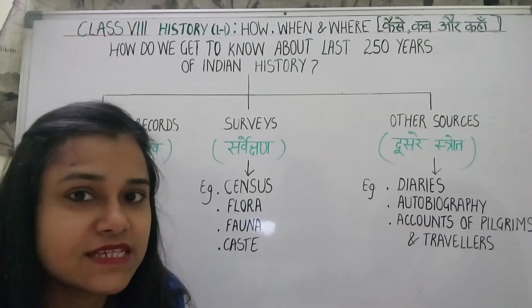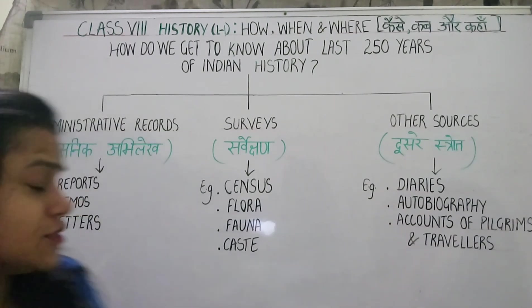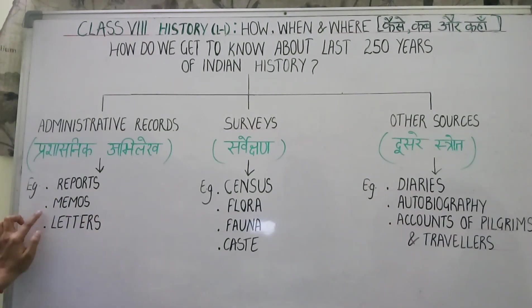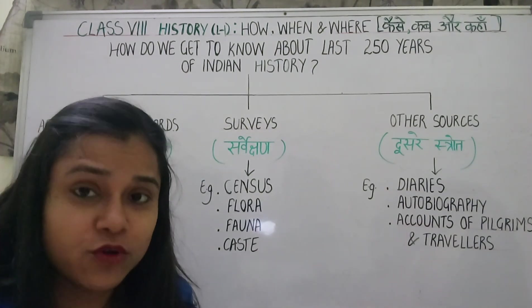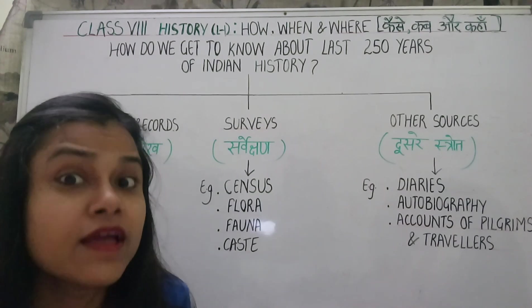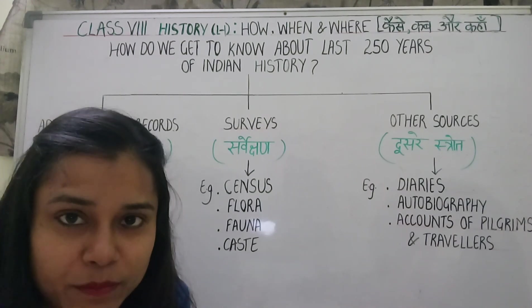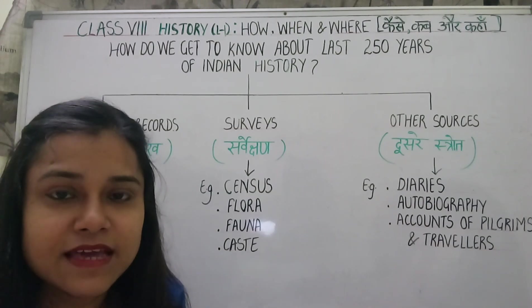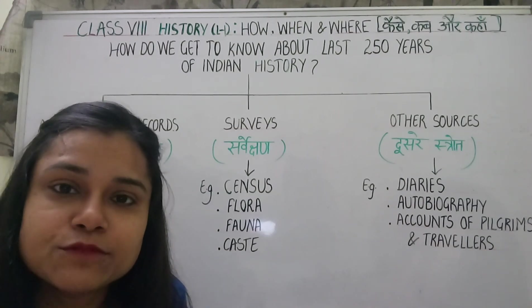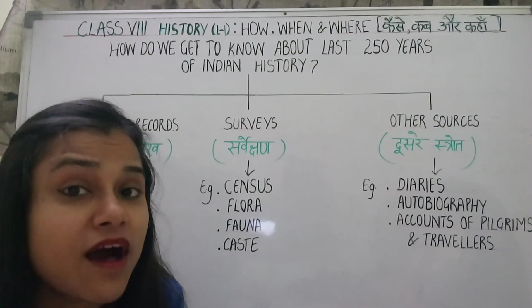So they started writing everything — every decision, whether it was reports, memos, or letters — all these things were written and preserved. Multiple copies were made because there were no photocopiers, and until the printing press came, everything was written by hand.